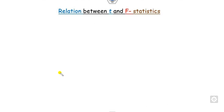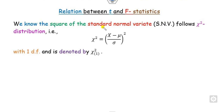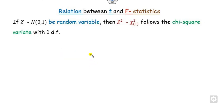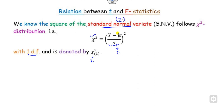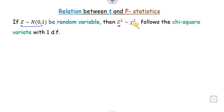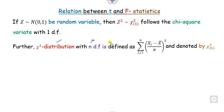To derive the relation between T and F, recall that if Z is a standard normal variable, then Z-squared follows the chi-square distribution with one degree of freedom. In general, a chi-square with N degrees of freedom can be expressed as a summation, denoted chi-square of N. So if Z follows the standard normal distribution, Z-squared follows the chi-square distribution with one degree of freedom.